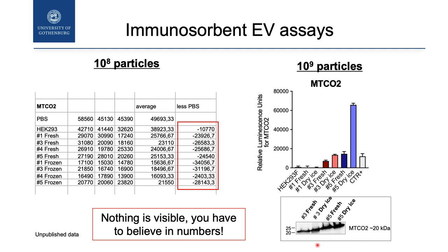What is the problem with this assay? What I don't like is that this type of assay gives you just a number. So you have to believe in it. Nothing is visible — you have just a number that is higher or smaller, but nothing is visible.